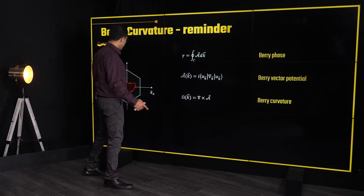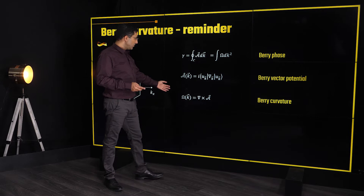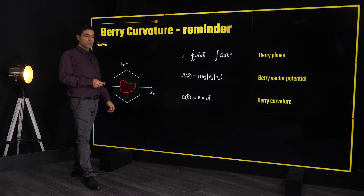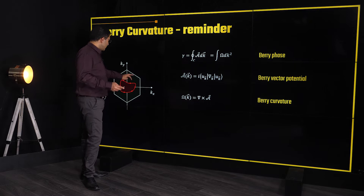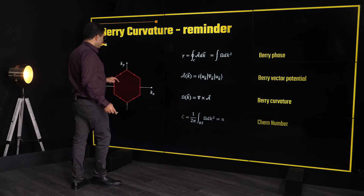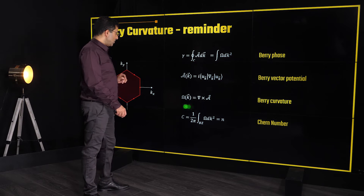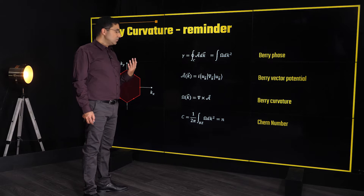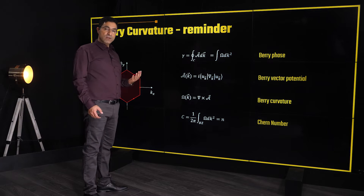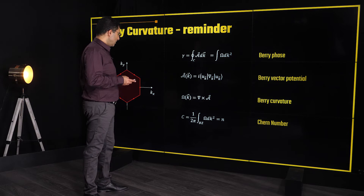The Berry curvature is a local property — it's defined for every k, just like a magnetic field is defined at any point in space. To get the Berry phase, we can equivalently integrate the Berry curvature over the area that a trajectory encloses. There is one special trajectory — going over the entire Brillouin zone. If we integrate the Berry curvature over the entire Brillouin zone and divide by 2π, we must get an integer, which we call the Chern number. This number characterizes our energy band: if it's zero, the band is trivial; if non-zero, the band carries topological properties.